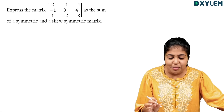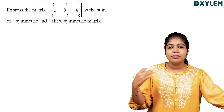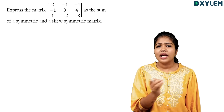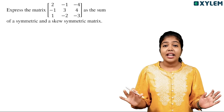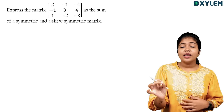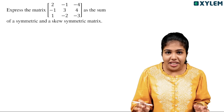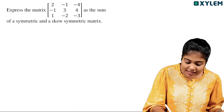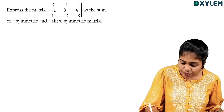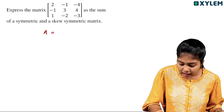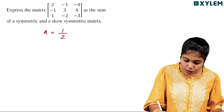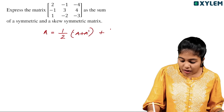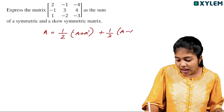We can see that any square matrix A can be expressed as symmetric and skew-symmetric. For example, we can see that a matrix A equals half into (A plus A transpose) plus half into (A minus A transpose).